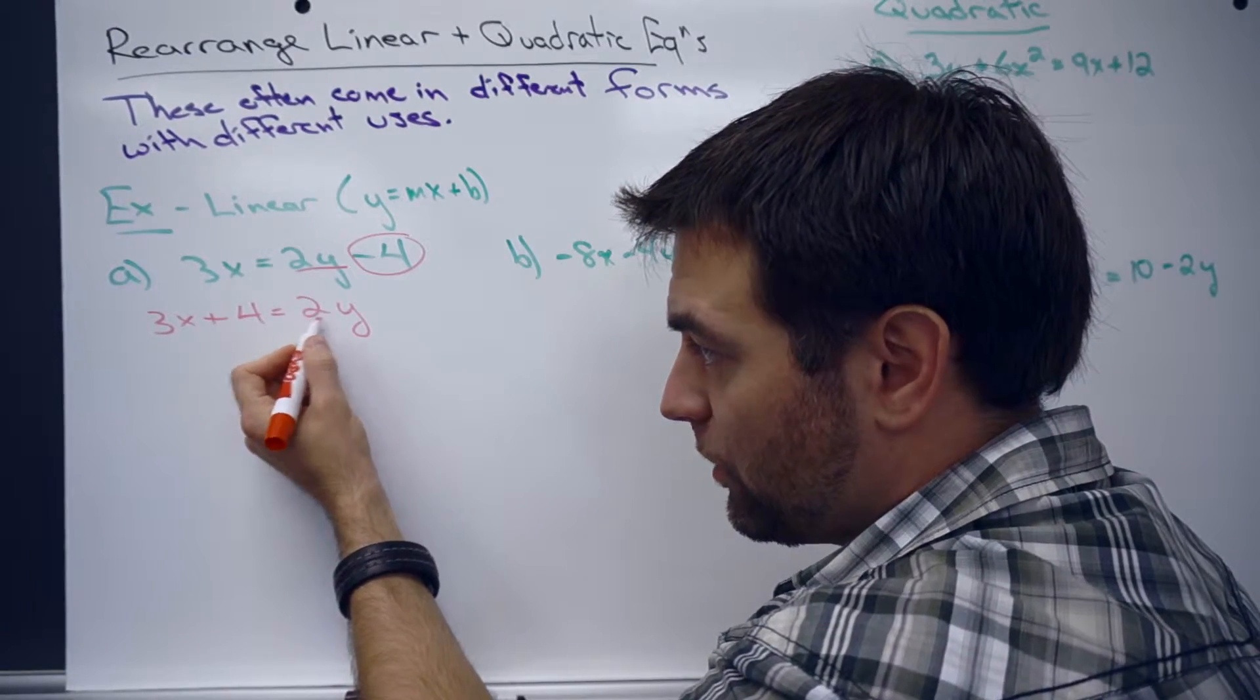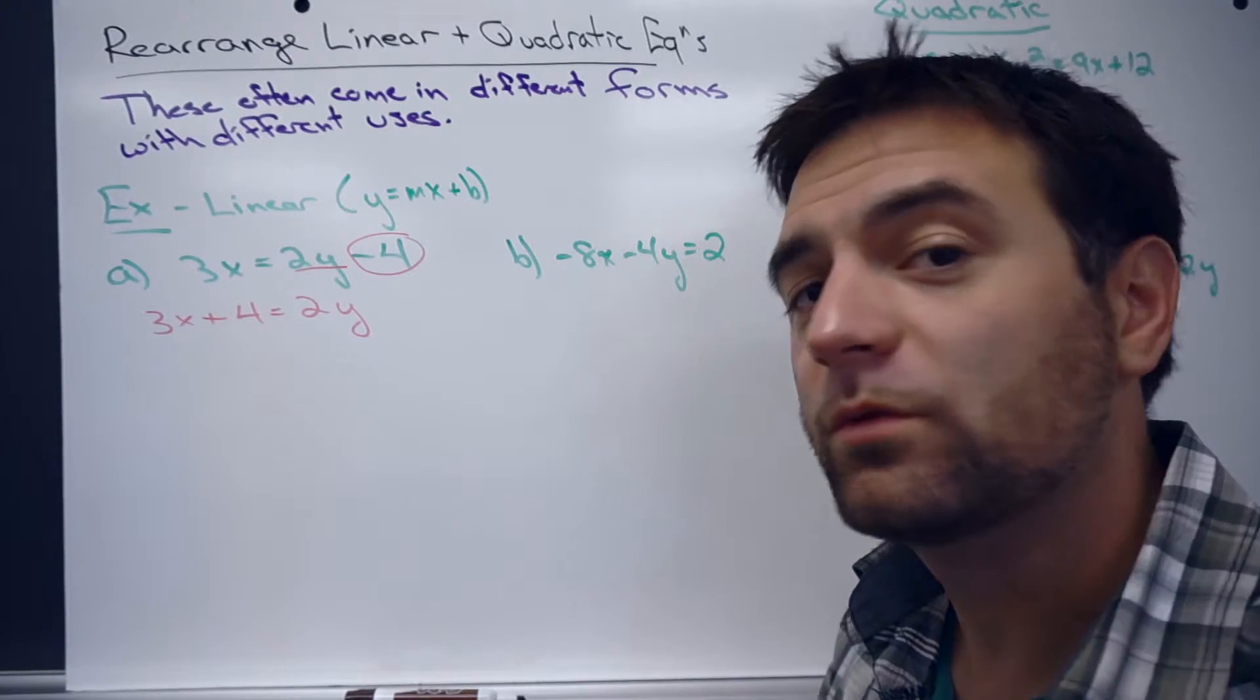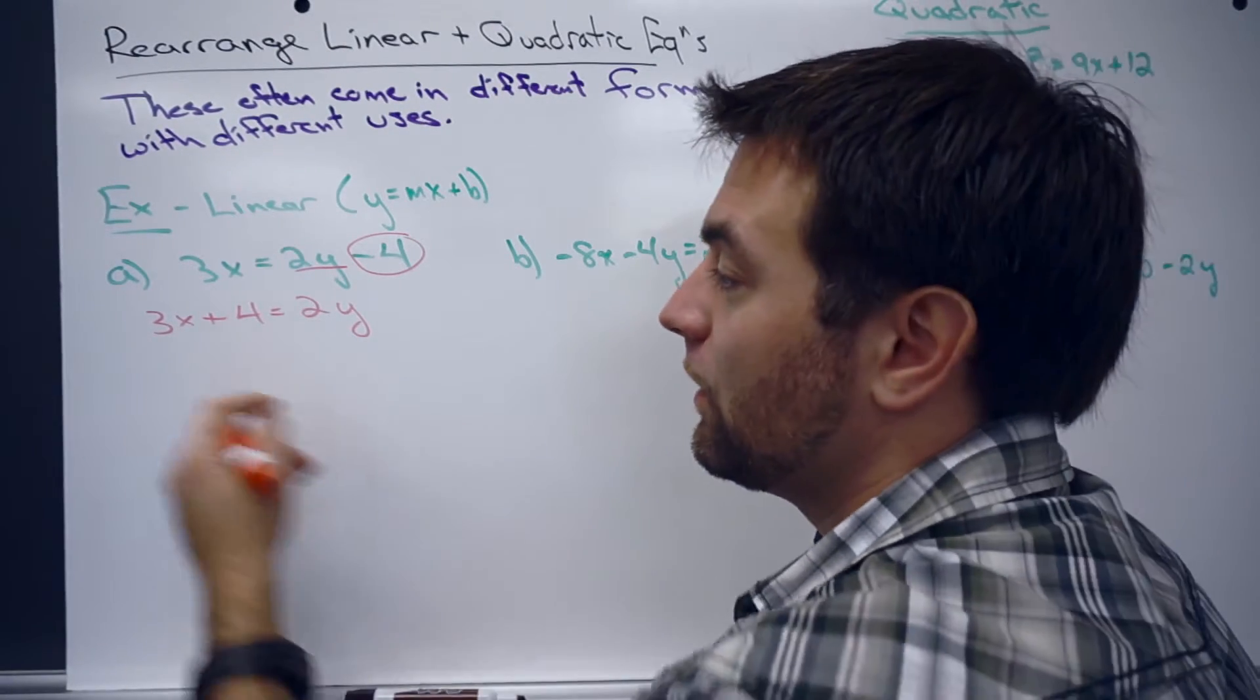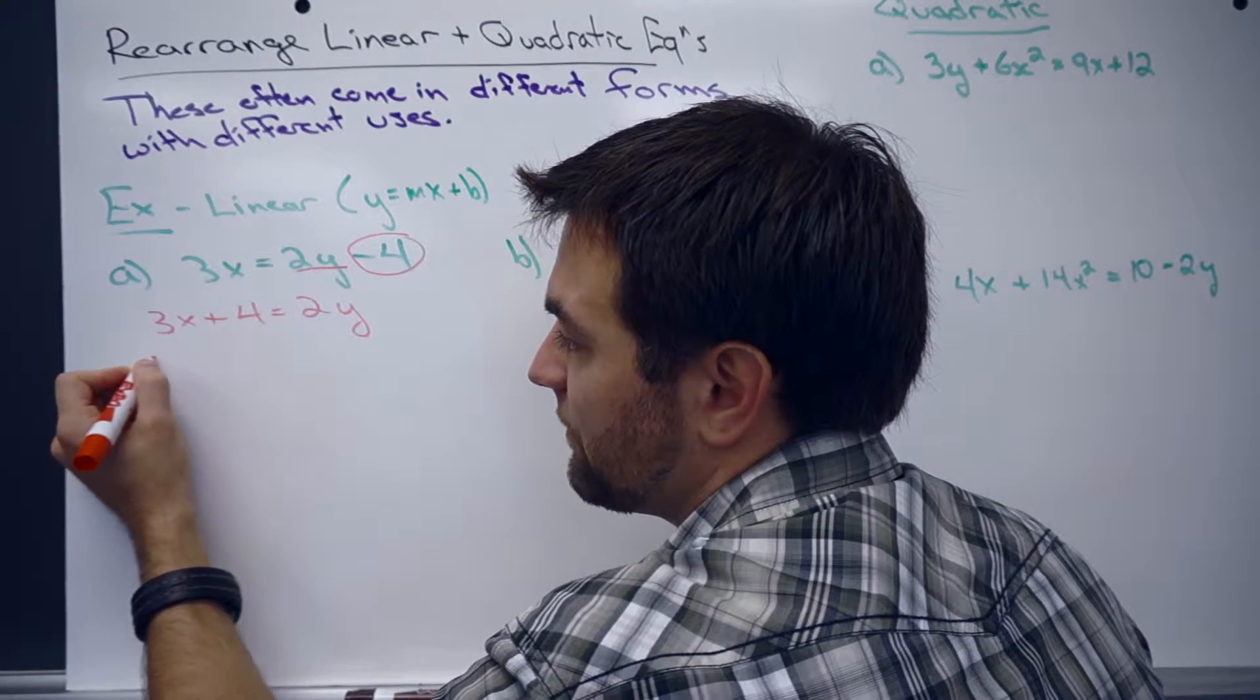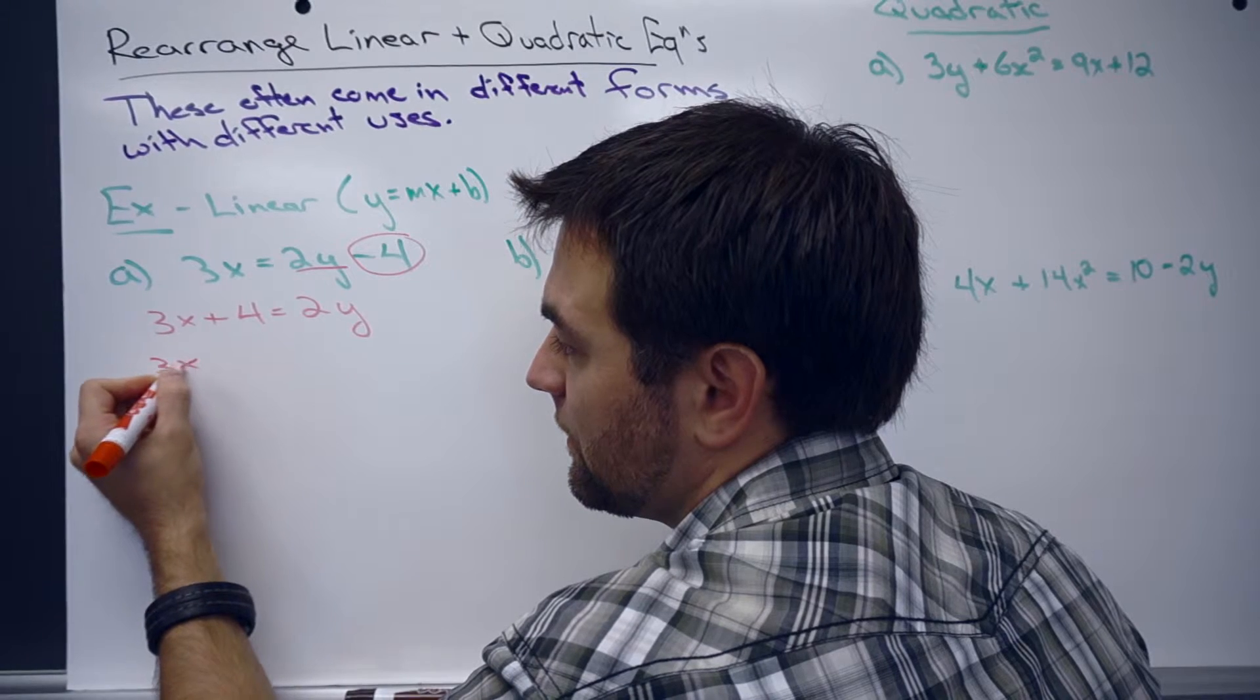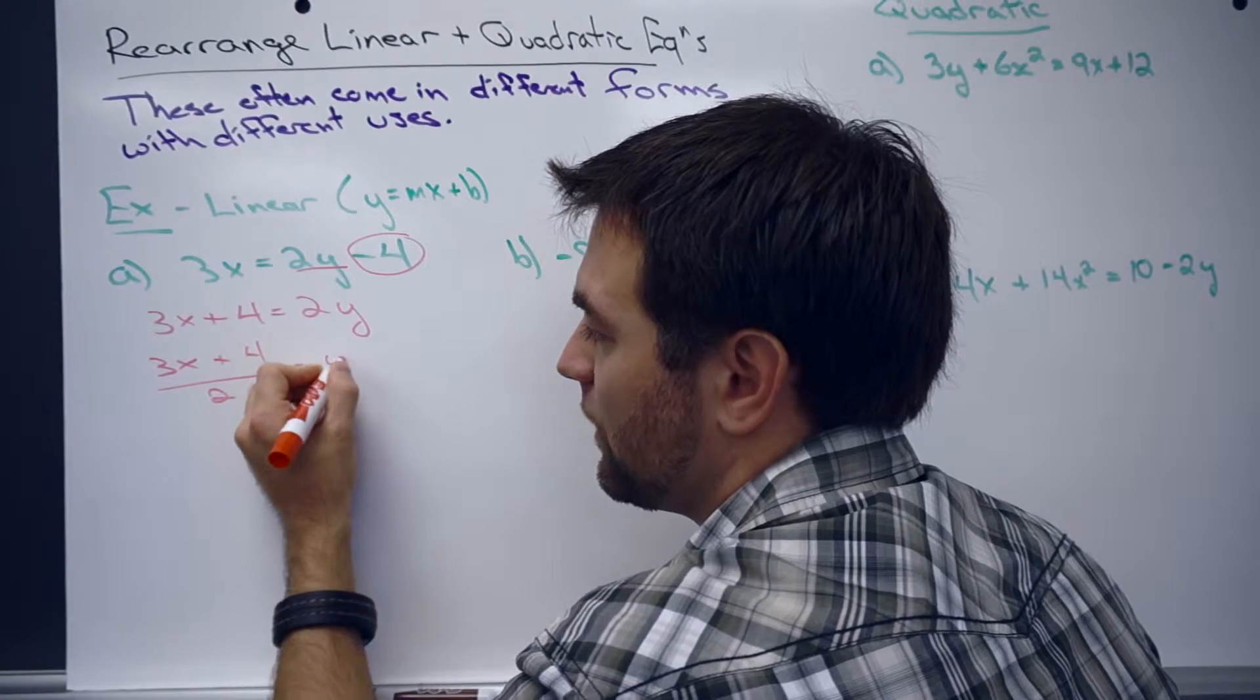Now, we're multiplying by 2 here, so we move it over and we need to divide it. When we divide on the other side, we have to divide everything by 2. So we'll have 3x plus 4 divided by 2 equals y.